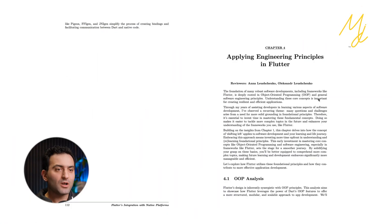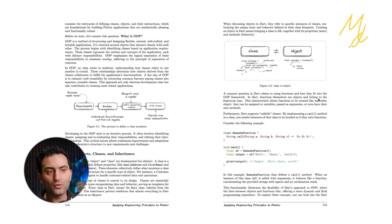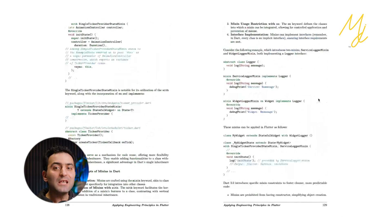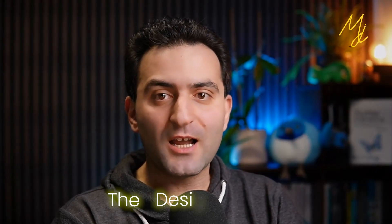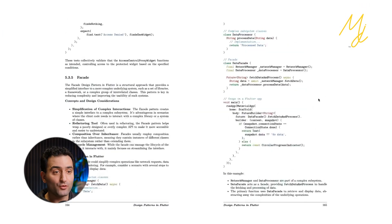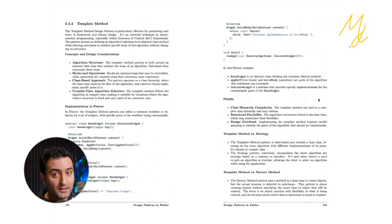We also go through the fundamentals of software engineering in the Flutter context, covering object-oriented programming with lots of source code referenced directly from the engine and framework itself, so you can look at the actual implementation. In chapter five, we go through design patterns — a bunch of patterns you frequently see both in the framework and in the applications you build — with examples and diagrams to help you understand and apply them.